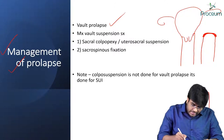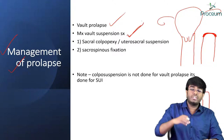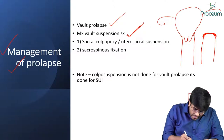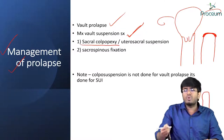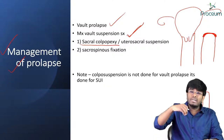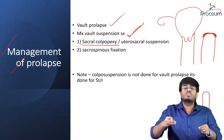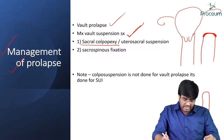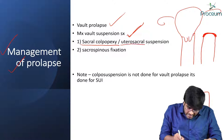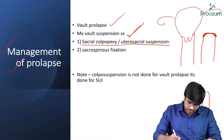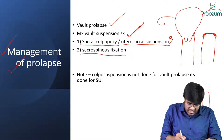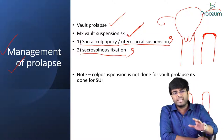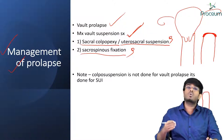The management of vault prolapse is vault suspension surgery. You have to suspend the vault, and this is done by sacrocolpopexy — where you attach the vault with a suture to the sacral bone posteriorly so it won't come down — or uterosacral suspension, or sacrospinous fixation. These are the surgeries for vault prolapse.